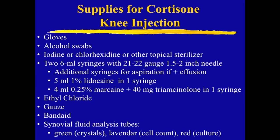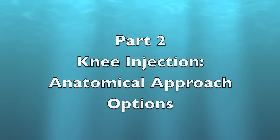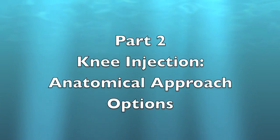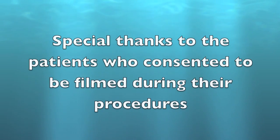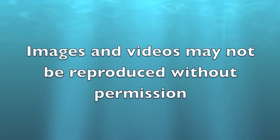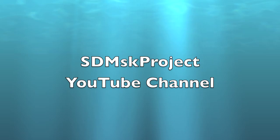This slide summarizes the supplies for a cortisone knee injection — you can print this slide as a resource to prepare an injection tray in advance. This concludes Part 1 of our knee injection series. Please join us for Part 2, knee injection anatomical approach options, and Part 3, knee aspiration and injection techniques. This video was brought to you by the San Diego Musculoskeletal Project — please look for more of our videos on the SDMSK Project YouTube channel.